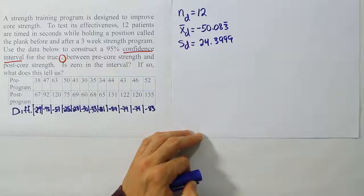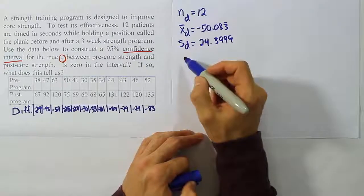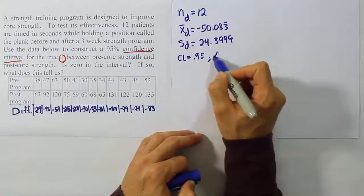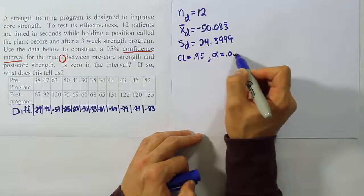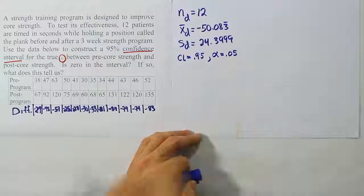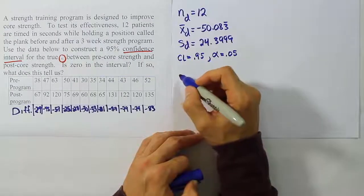And then from there, we're going to take the confidence level from the problem, which they say is 95 percent. Of course, that means that alpha is 0.05. Okay, so step one, getting the data is done.